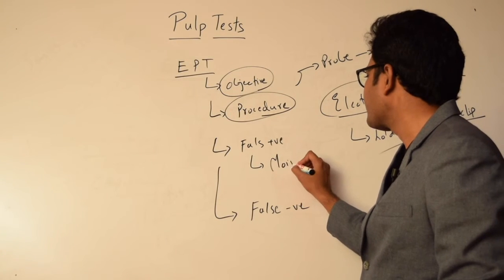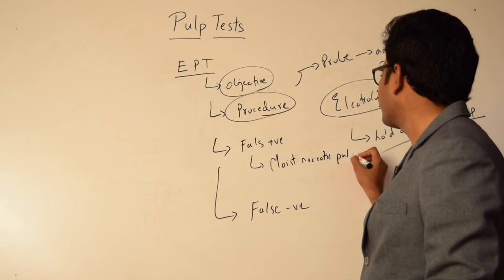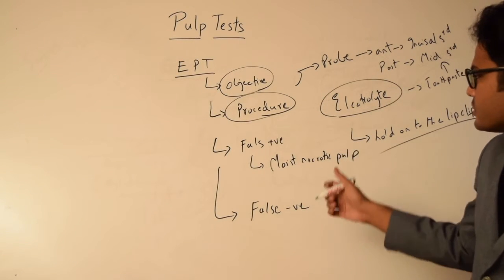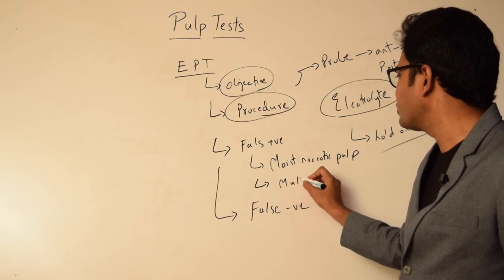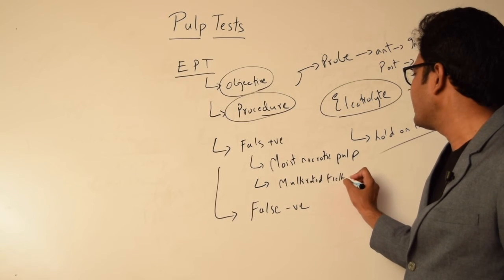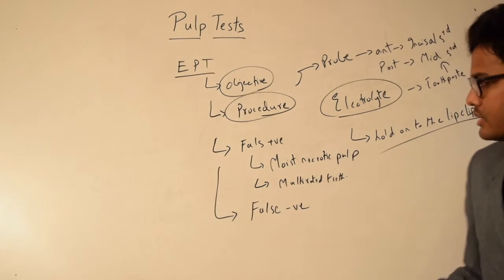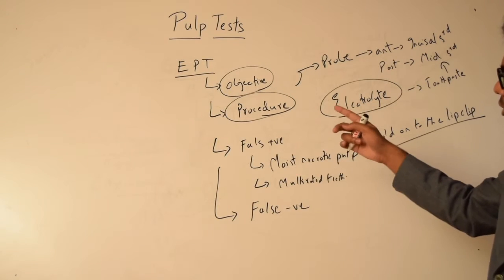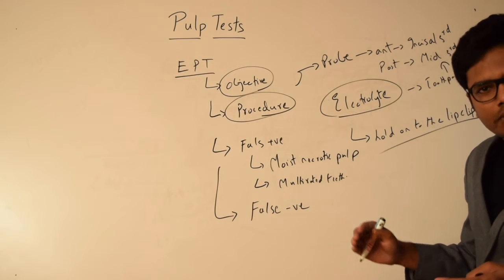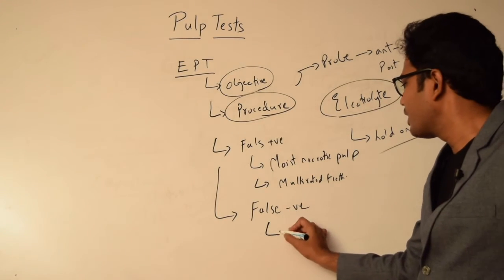False positive results are usually seen in cases where we have moist necrotic pulp. In cases where there is necrotic pulp which is moist, there is passage of electricity leading to false positive results. On the other hand, in case of multi-rooted teeth, there can be a single root or few roots containing vital pulp tissue, so even in those circumstances there can be false positive results.